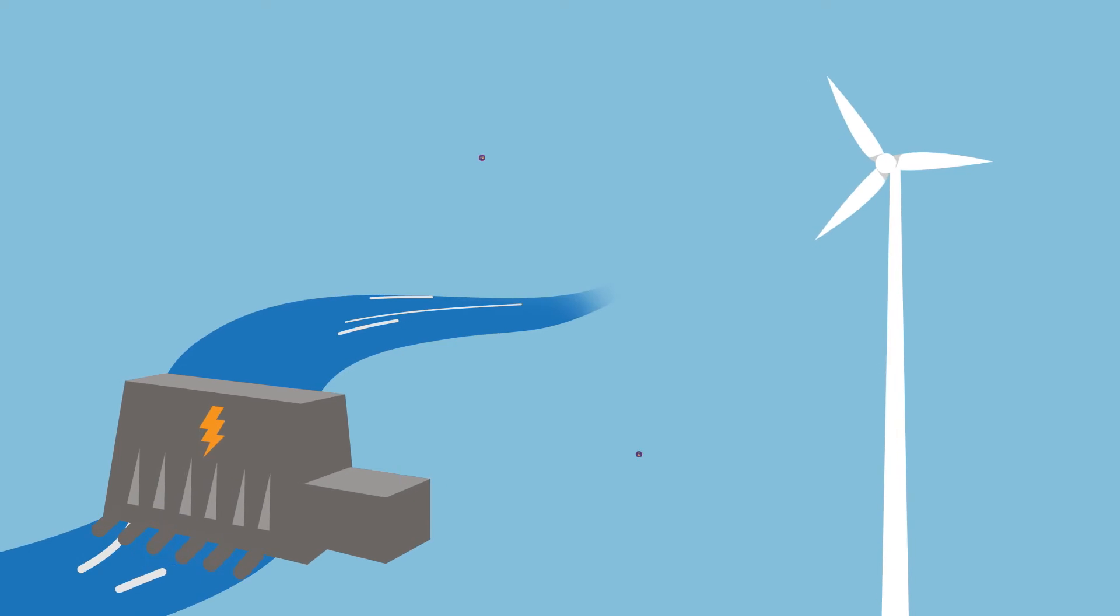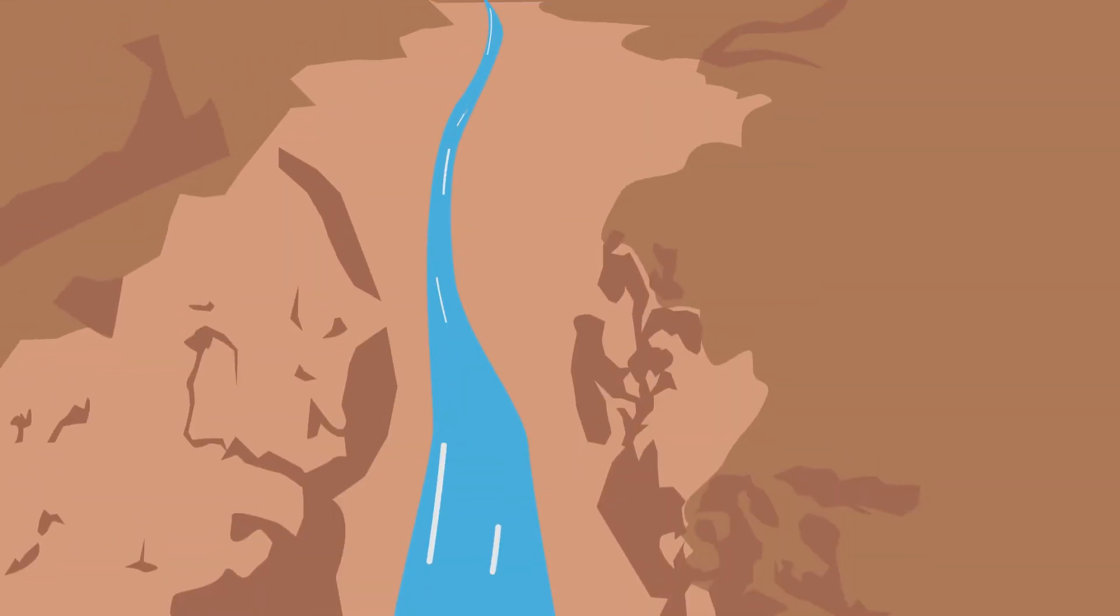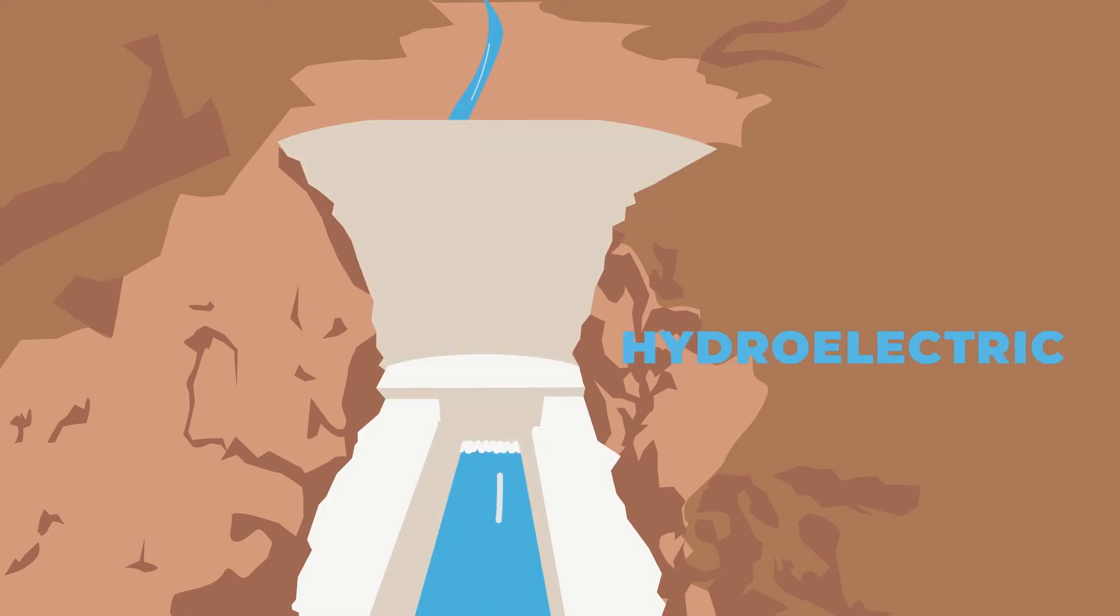Windmills and water wheels now power giant turbines that generate electricity. In places where there isn't enough flowing water, we've created it by building hydroelectric dams.